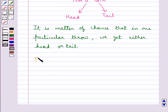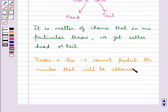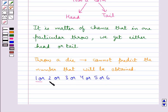Now, when we throw a die, we cannot predict the number that will be obtained. On throwing the die, we would get the numbers 1 or 2 or 3 or 4 or 5 or 6, and it is a matter of chance that we get the number of our wish.